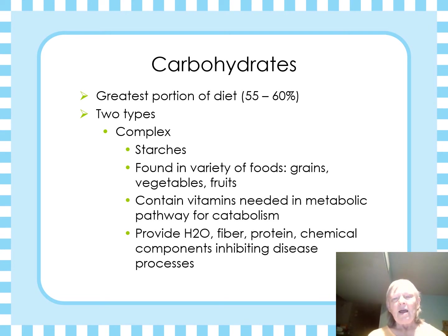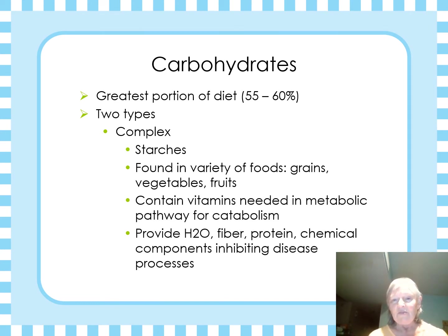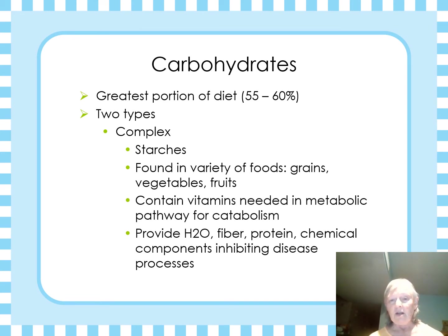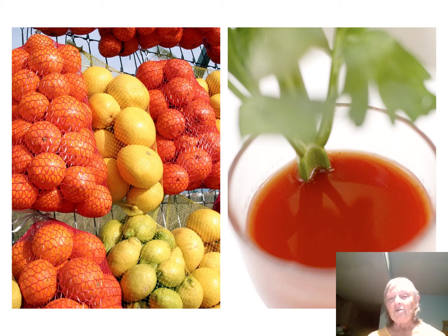Fibers for the most part can't be broken down, so they basically leave the body undigested. If you think about corn — if you eat corn, corn is a really cool fiber but it comes out much as it goes in. As you can see, your carbs should be the greatest portion of your diet, somewhere between 55 to 60 percent, and we talked about how glycogen energy is related to the respiratory system. Complex carbs are your starches, found in your foods, and they do also have some vitamins you need. Remember, vitamins and minerals are your micronutrients. They also give us water, fiber, protein — all those things that can help us inhibit disease. Here you can see grapefruits, lemons, oranges — lots of really good things. There's tomato juice, and if you're not keen on tomato juice, celery is pretty good for you too. Celery contains a lot of fiber.